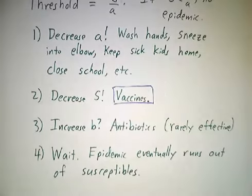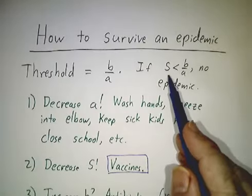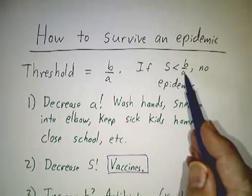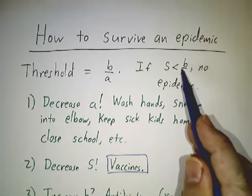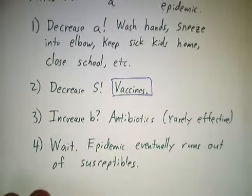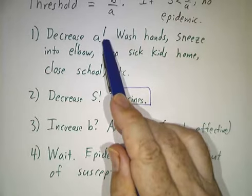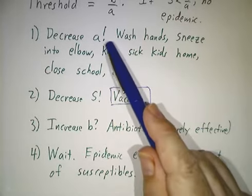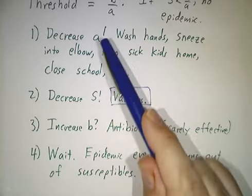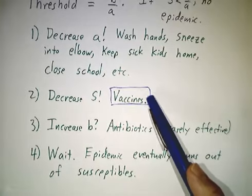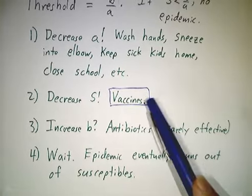And finally, if all else fails, you can wait. Eventually, epidemics always run out of susceptibles. Eventually, so many people are sick that the number of susceptibles is less than B/A, and once it hits that point, then the infection starts to die off. But you don't want to wait that long. You'd really rather stop the infection in the early stages by decreasing the transmission coefficient and preferably to keep it from getting started in the first place by decreasing the number of susceptibles.